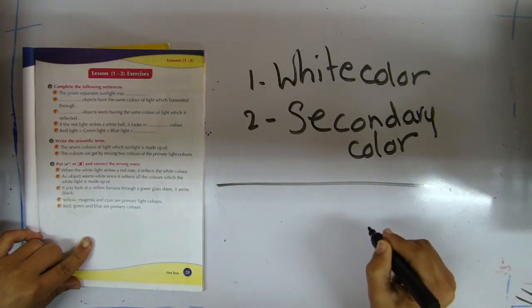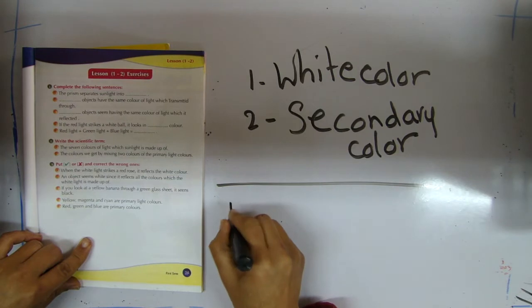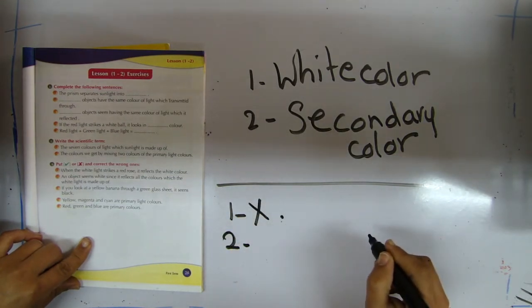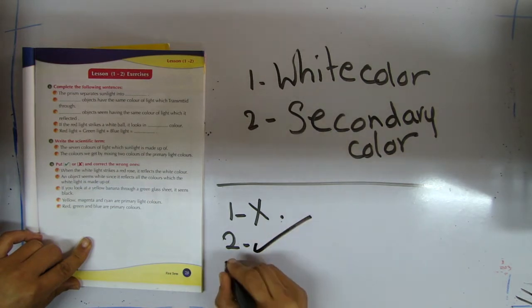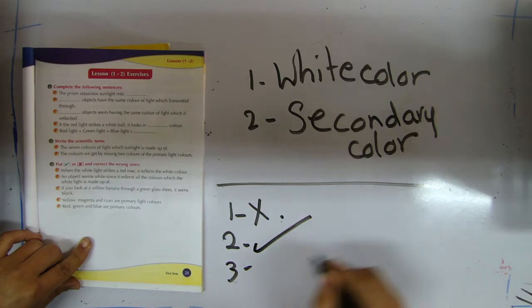Question number three: put right or wrong and correct the wrong one. Number one: when the white light strikes a red rose, it reflects the white color. Number one is wrong — it reflects the rose color. Number two: an object seems white since it reflects all the colors which the white light is made up of. It's correct. Number three: if you look at the yellow banana through a green glass sheet, it seems black. It's correct.